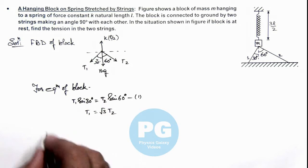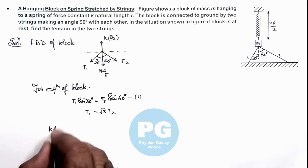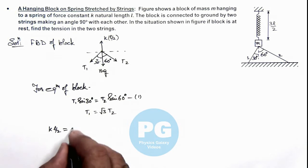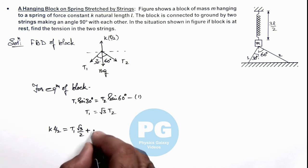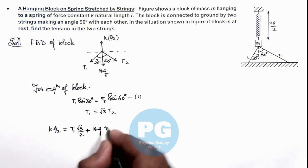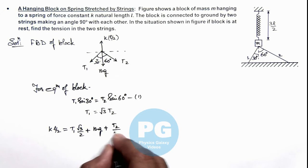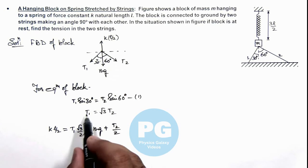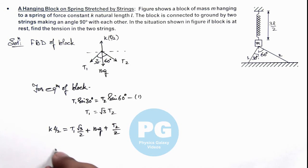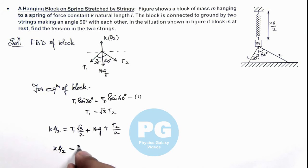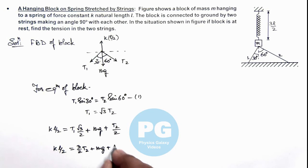In the vertical direction, we can write: k times l/2 = T1·cos30° + mg + T2·cos60°. This becomes kl/2 = (√3/2)·T1 + mg + T2/2. Substituting T1 = √3·T2, the equation becomes kl/2 = (3/2)·T2 + mg + T2/2.